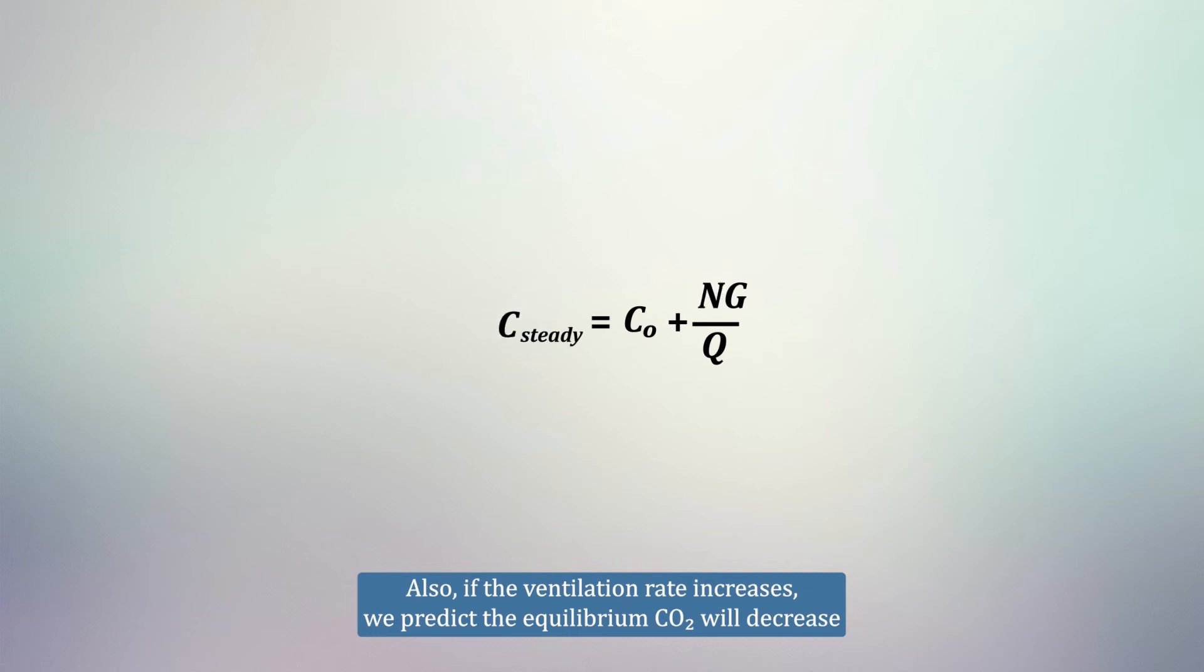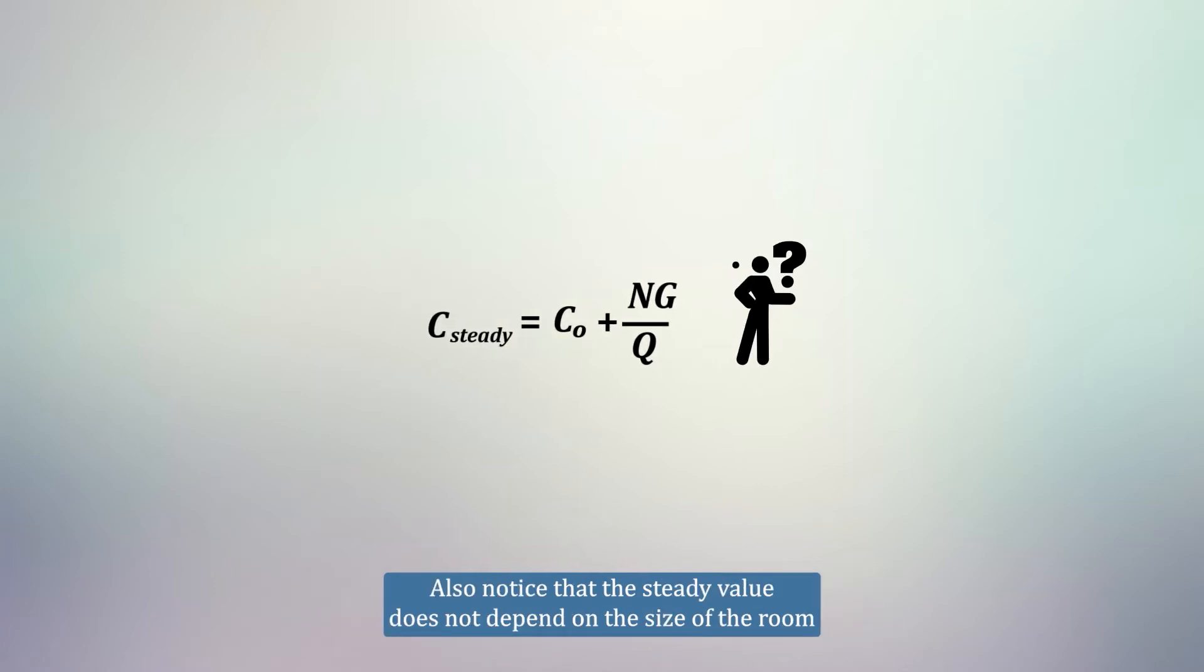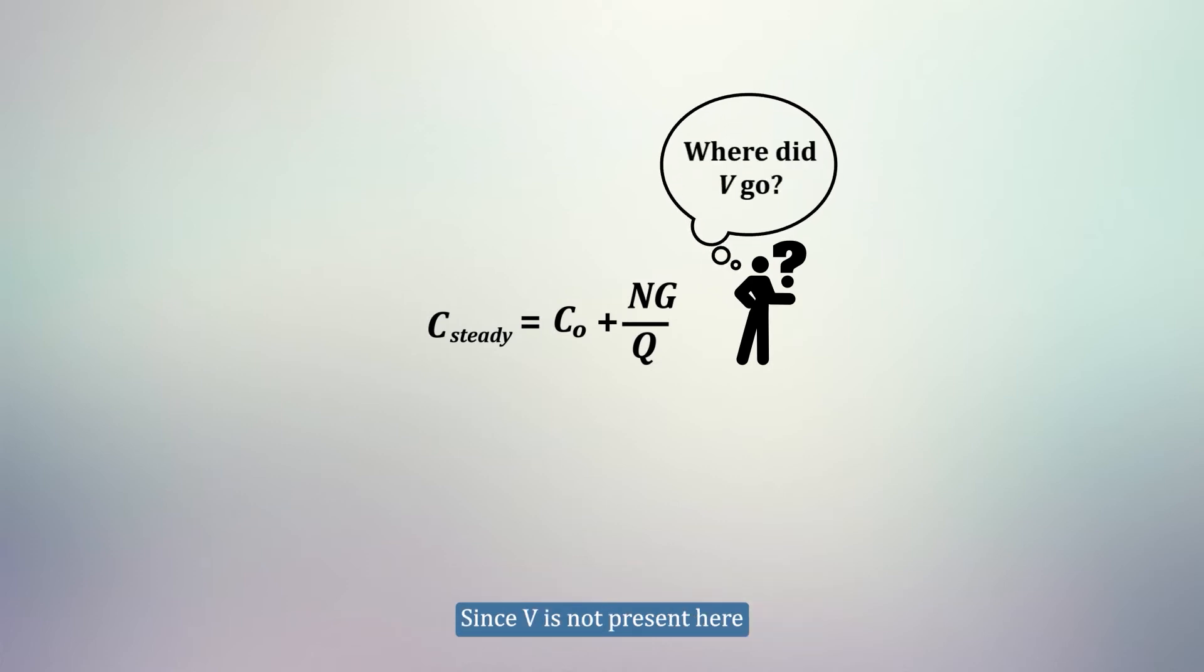Also, if the ventilation rate increases, we predict the equilibrium CO2 will decrease. Notice that we've arrived at these conclusions without actually needing to solve the differential equation. Also, notice that the steady value does not depend on the size of the room, since V is not present here.